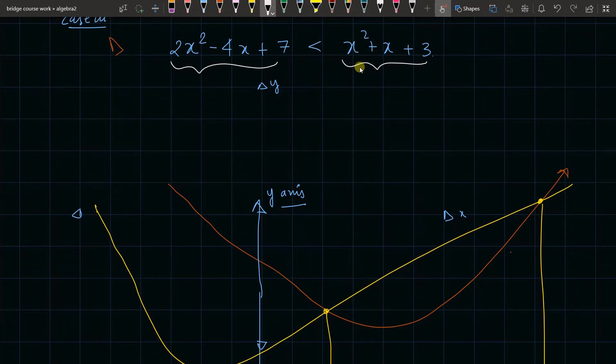One way to solve this whole question—this is one of the ways, method one—is directly trying to plot these two graphs. So let's say one of the functions is f(x), and that f(x) is written by 2x² - 4x + 7. We have another function g(x) which is x² + x + 3. The question is f(x) should be less than g(x).